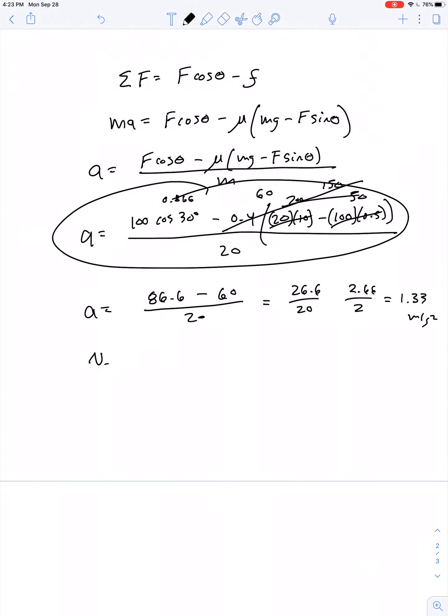So we have an acceleration. We have an initial velocity of 0. We're asked for a final velocity, and we also have a displacement of 15 meters. So final velocity squared equals initial velocity squared plus 2 times acceleration times displacement. So our final velocity is the square root of 2 times 1.33 meters per second squared times 15 meters.